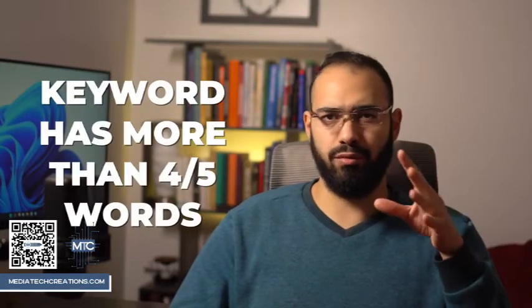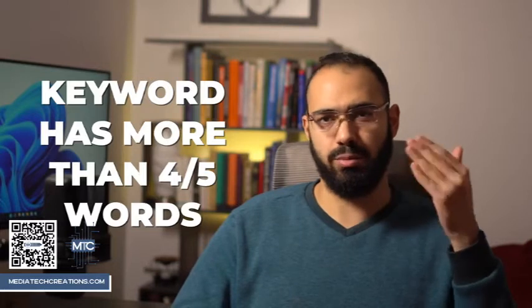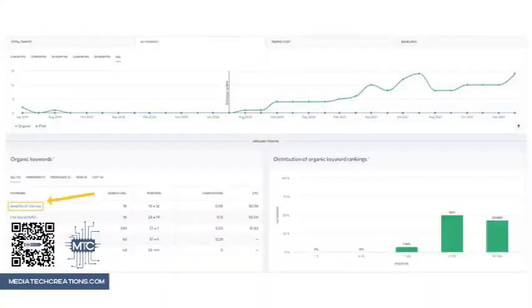And then there are also long tail keywords. This is when a keyword has more than four or five words, meaning that it's more specific. Long tail keywords have less volume usually because they're more specific, but they'll be more targeted, which is better because you'll waste less time and have a higher click-through rate.